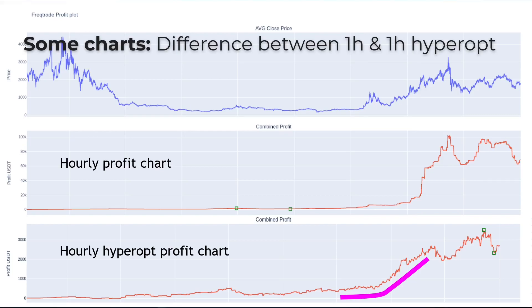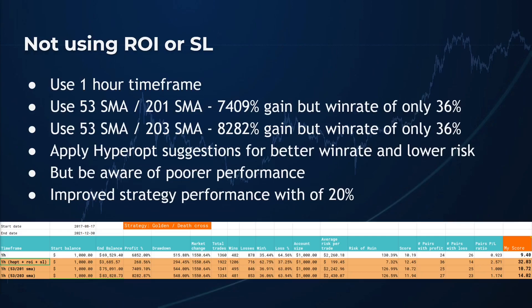In this case it's a trade-off between your risk appetite and the urge to attain huge trading profits. I also tried to do a backtest without the proposed hyperopted ROI and stop loss settings, but only with the SMA 53 and SMA 201. These small adjustments provided even more gains, but also with additional risk. The proposed 53/201 SMA setting increased the percentage gain to over 7400%. I also did another hyperopt session — not shown in this video — which proposed a setting of 53 SMA combined with 203 SMA. Backtesting these provided a percentage gain of 8200%, but in all cases the win rate stayed around the original 36%.